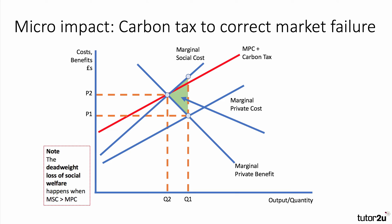The analysis diagram here is the market failure diagram. Marginal social cost lies above marginal private cost, and in theory there's a deadweight loss shown by the green shaded area. The private cost plus the carbon tax would contract demand towards the social optimum output Q2.